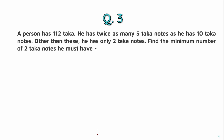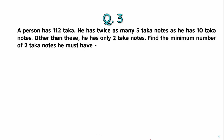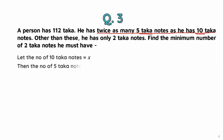Moving on to question number 3. A person has 122 rupees. He has twice as many 5-rupee notes as 10-rupee notes. Find the minimum number of 2-rupee notes. The position of 10-rupee notes is defined, and the position of 10-rupee notes is equal to 2-rupee notes.